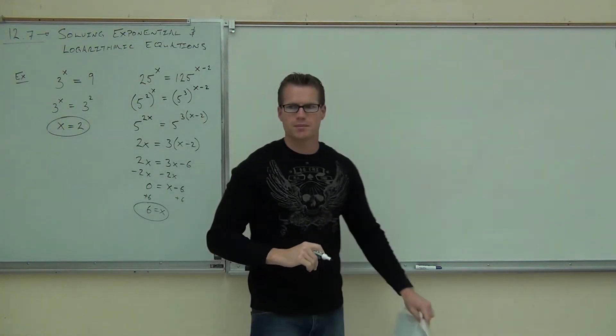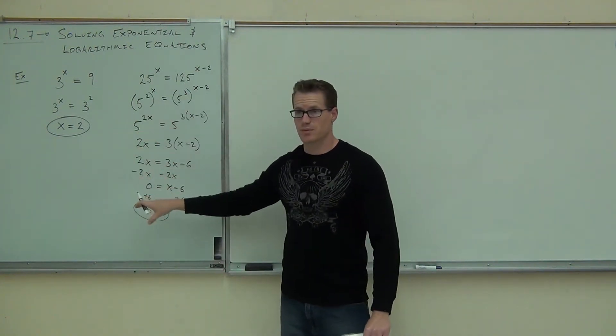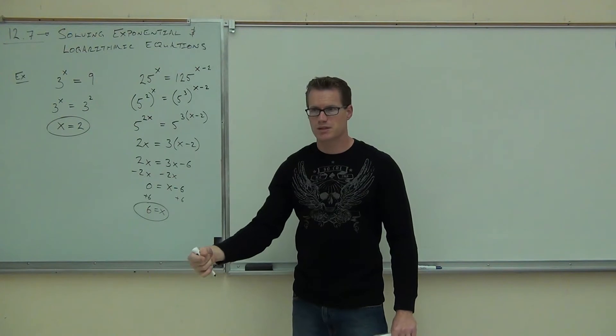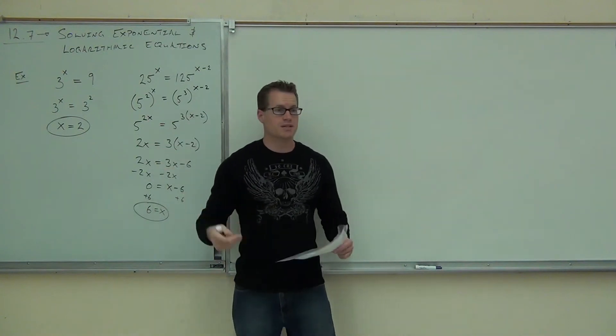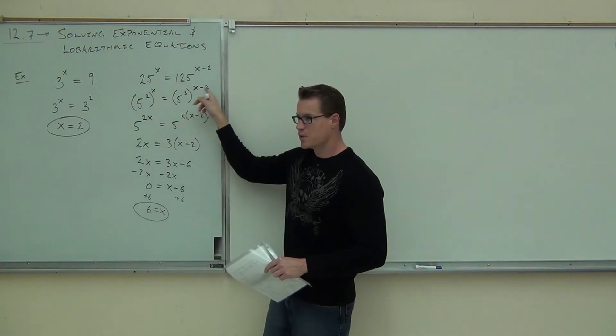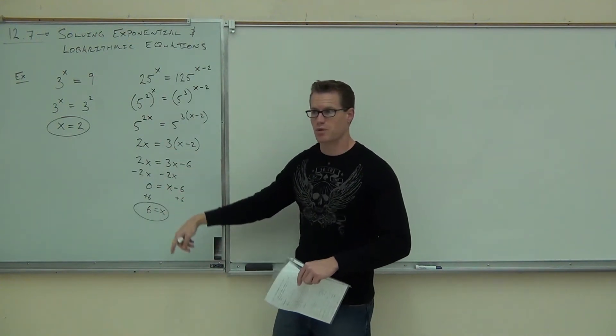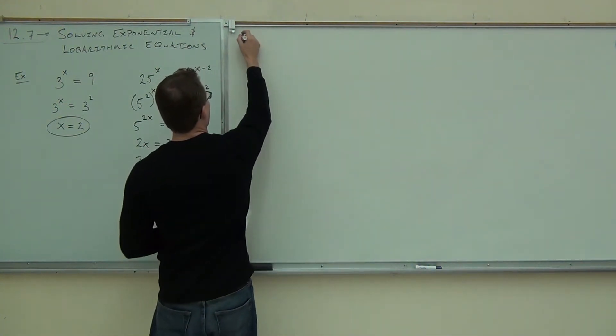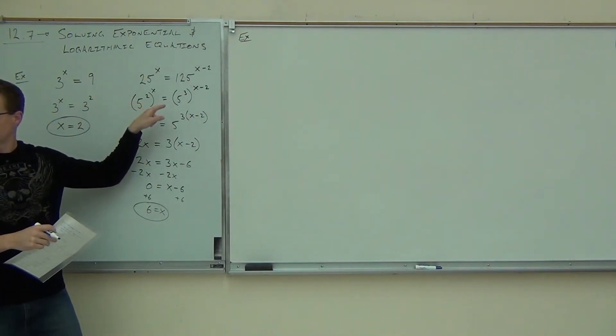Of course, I went really quickly through that because we've done all of that before. Would you nod your head or raise your hand if you're okay with doing these two examples? So we're finding our common bases, we're setting our exponents equal. Sometimes they're very easy, sometimes you have to do some work, but still it's not that big of a deal as long as you can find those common bases. We know that's 5 squared, that's 5 to the third. We multiply those exponents, so 2 and 3 times exponents 2. We distribute and we solve.